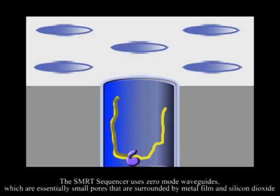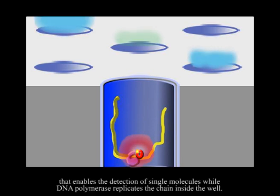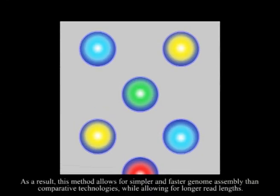The SMRT sequencer uses zero-mode waveguides, which are essentially small pores surrounded by metal film and silicon dioxide that enable the detection of single molecules while DNA polymerase replicates the chain inside the well.